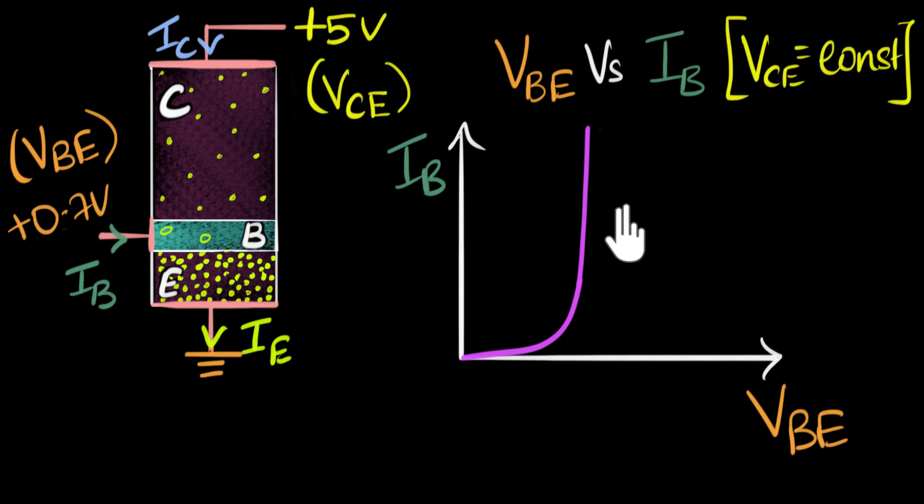So this voltage at which this current starts skyrocketing, that's about 0.7 volt. And by the way, even though this current is skyrocketing, considerably this current is pretty low compared to say the emitter current or the collector current. This current, by the way, is in microamperes.